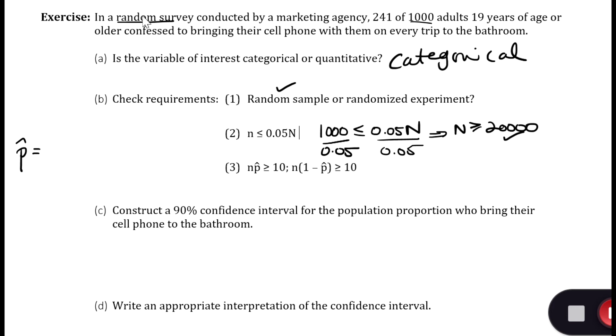In my survey I asked 1000 people and 241 of them said that they took their phone to the bathroom. So x is the number of successes, and being a success means having the criteria that you're measuring. There are 241 of those people who brought their phone to the bathroom, out of 1000 people. So my p-hat in this situation is 0.241.